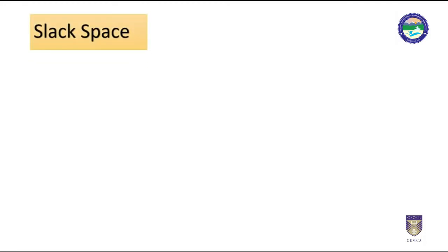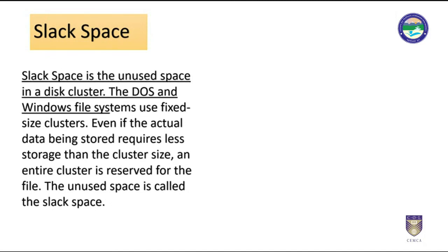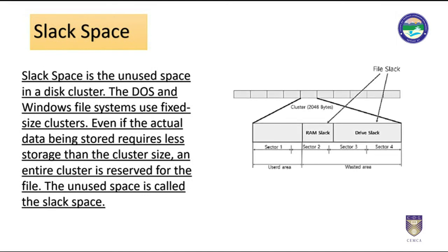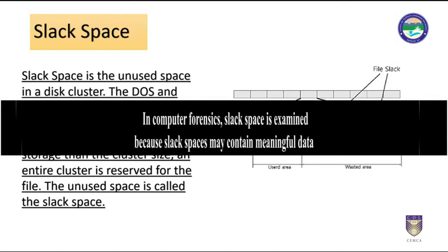Slack space is the unused space in a disk cluster. Disk operating systems and Windows file systems use fixed-size clusters. Even if the actual data being stored requires less storage than the cluster size, an entire cluster is reserved for the file — the unused space is called slack space. DOS and older Windows systems used 16-bit file allocation table (FAT16), which results in very large cluster sizes for large partitions. For example, if the partition size is 2GB, each cluster will be 32KB. Even if a file requires only 4KB, the entire 32KB will be allocated, resulting in 28KB of slack space. In computer forensics, slack space is examined because it may contain meaningful data.